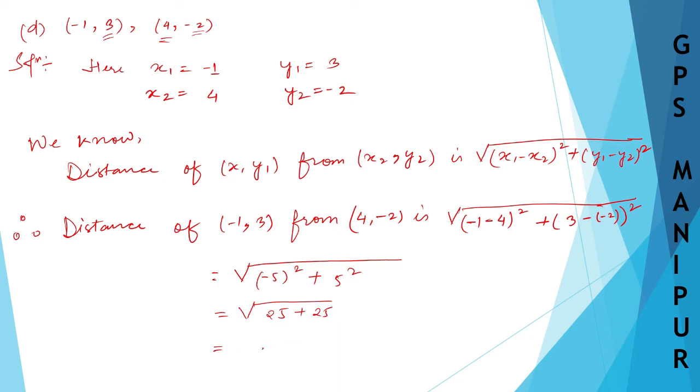This will be root over 5 to the 25 plus 5 to the 25, 25 plus 25, it is 50. 5 times of 50, 5 to the 10.